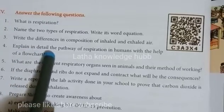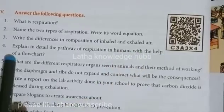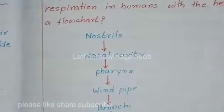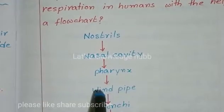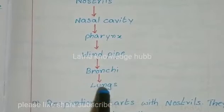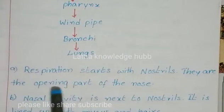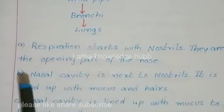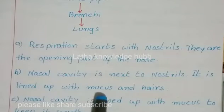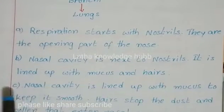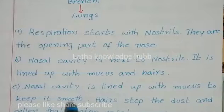Explain in detail the pathway of respiration in humans with the help of a flow chart. Answer: Nostrils → Nasal Cavity → Pharynx → Windpipe → Bronchi → Lungs. Respiration starts with the nostrils, which are the opening part of the nose. The nasal cavity is lined with mucus and cilia to keep it smooth.